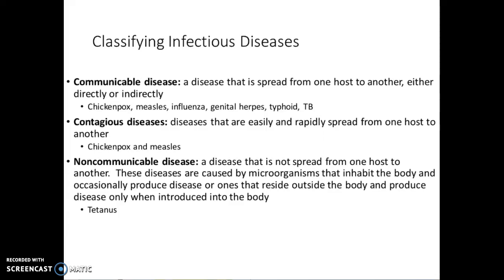For example, measles can have a reproductive number as high as 19, meaning one person can spread the disease to 19 people — it is a very contagious disease. In contrast, something like HIV or Ebola is generally not as contagious; their reproductive number is typically one or two, though in some outbreak-specific situations it has been higher depending on the community.